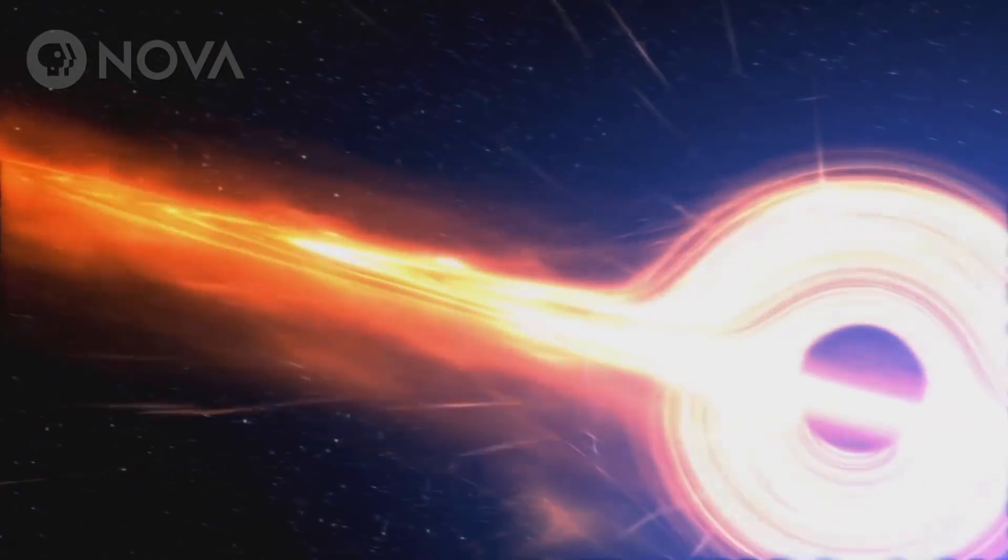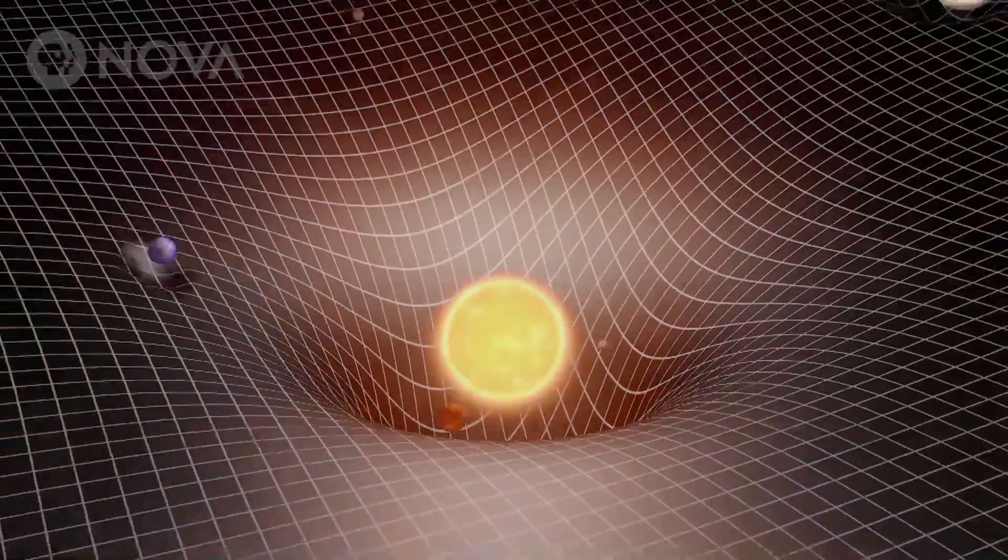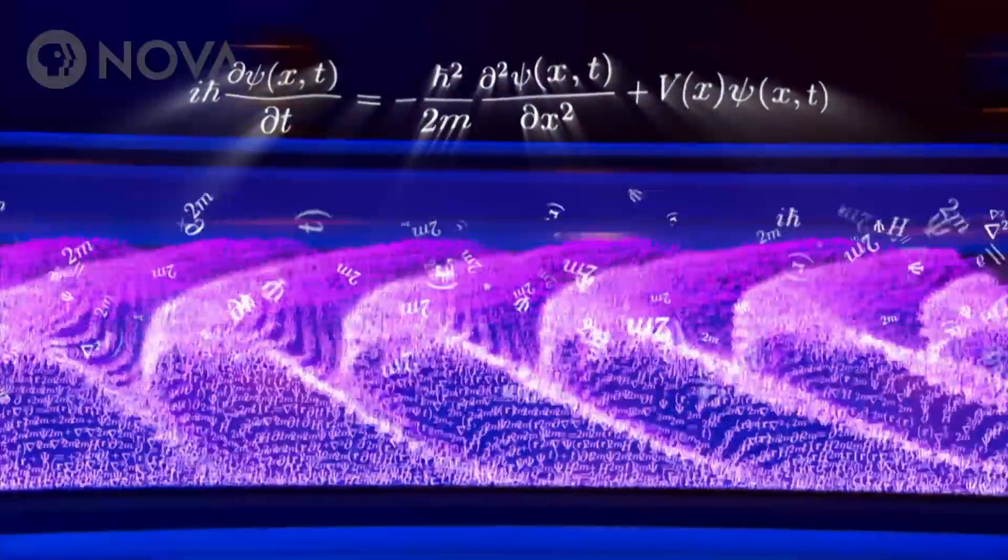Black holes challenge the two pillars of modern physics. First, the space bending theory of gravity, that's Einstein's theory of general relativity. And second, the theory of tiny stuff, or in other words, quantum theory.